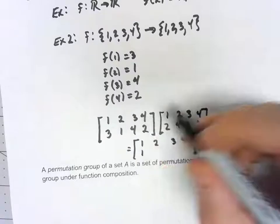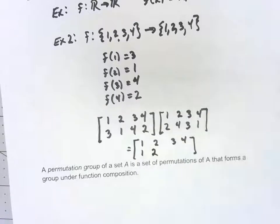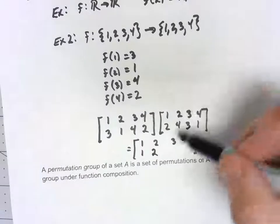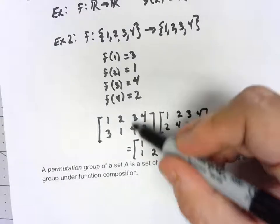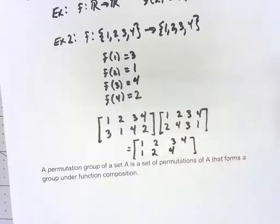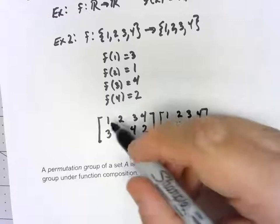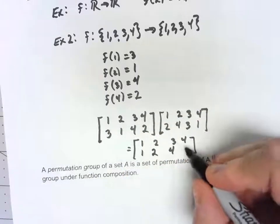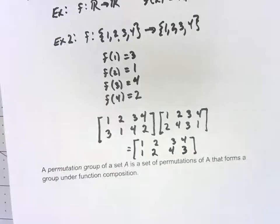2 maps to 4, 4 maps to 2, so 2 has come back to 2. 3 maps to 3, then 3 maps to 4, so 3 maps to 4. 4 goes to 1, 1 goes to 3, so in the end 4 goes to 3.